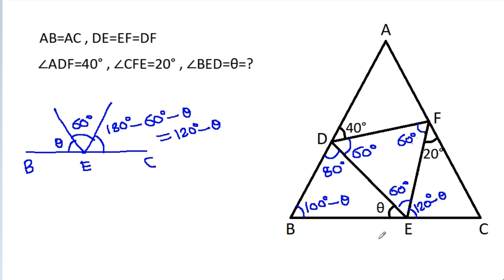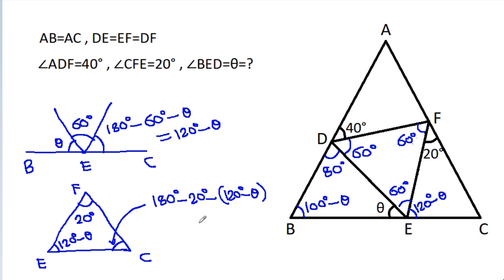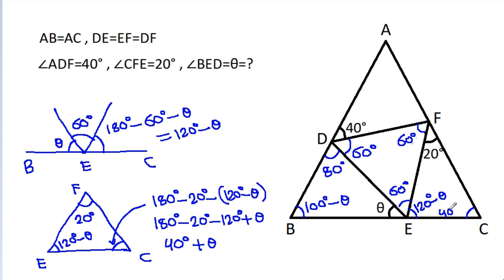In triangle CEF, this angle is 120 degrees minus theta. So the remaining angle will be 180 degrees minus 20 degrees minus 120 degrees minus theta, which equals 180 minus 20 minus 120 plus theta, giving 40 degrees plus theta. Wait — that simplifies to 40 degrees minus theta. So this angle is 40 degrees minus theta.